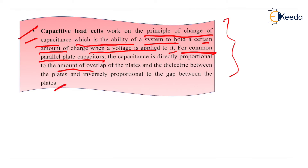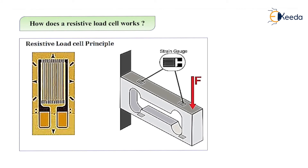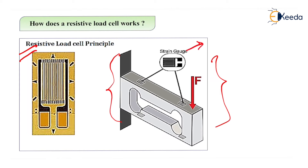We have now seen both resistive and capacitive types of load cells. Looking at the diagram of the resistive load cell, we can see its internal structure. There are strain gauges connected to the load cell body, forming a Wheatstone bridge configuration. These strain gauges are responsible for the change in resistance.